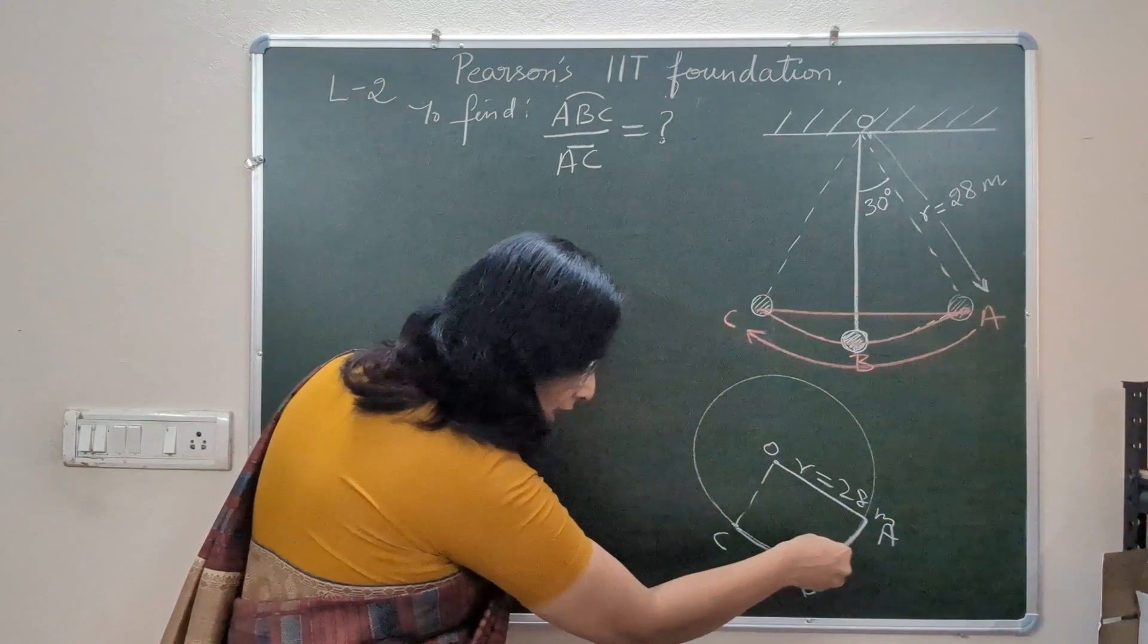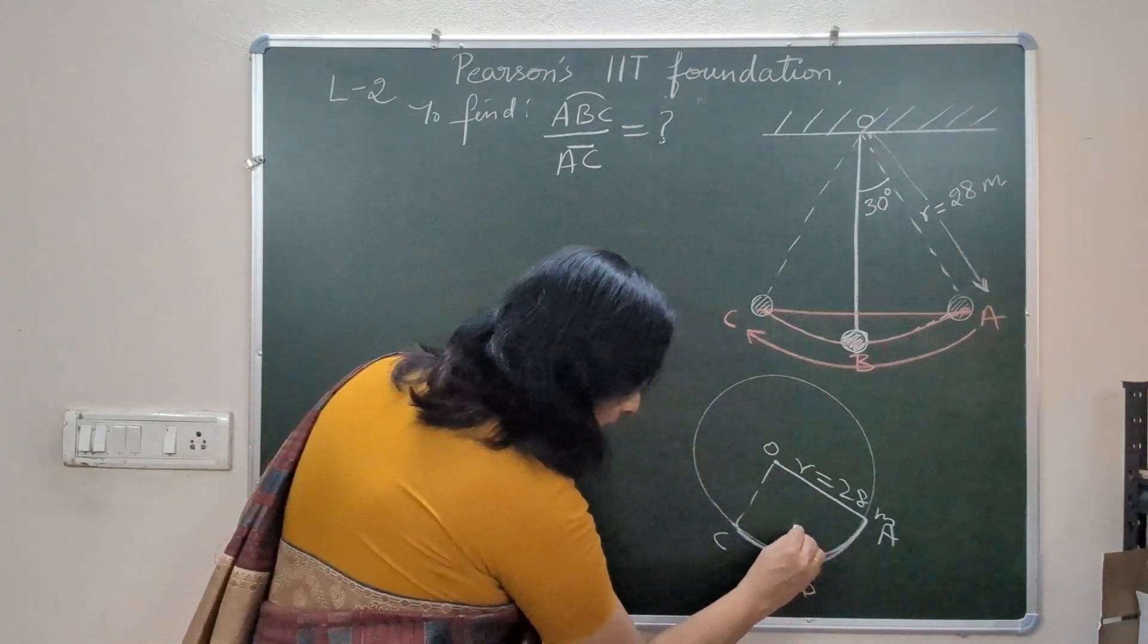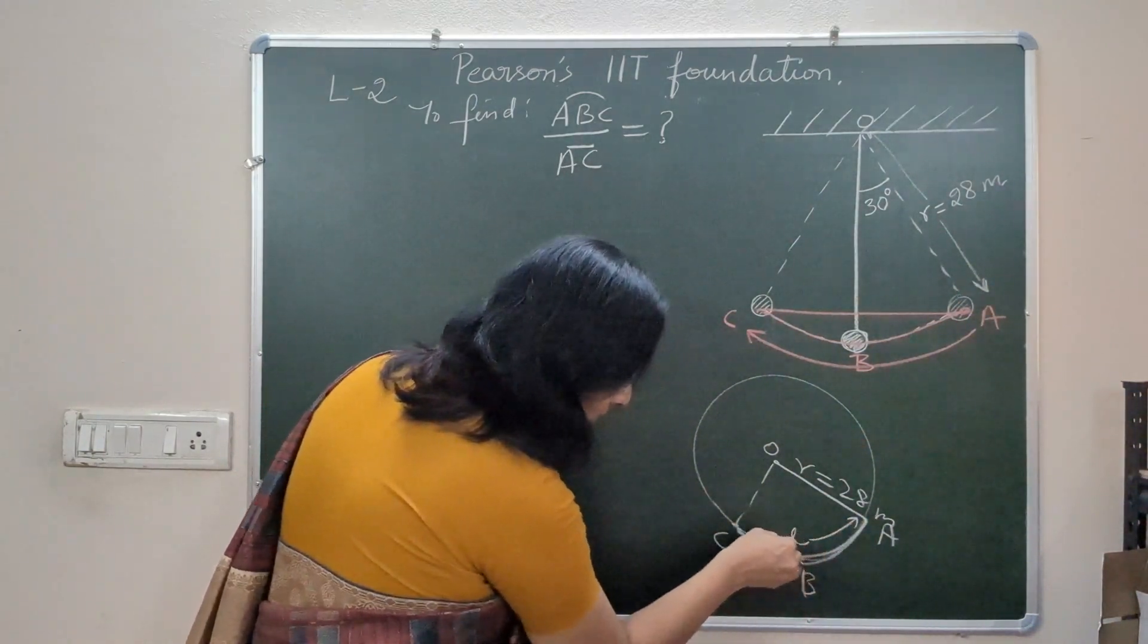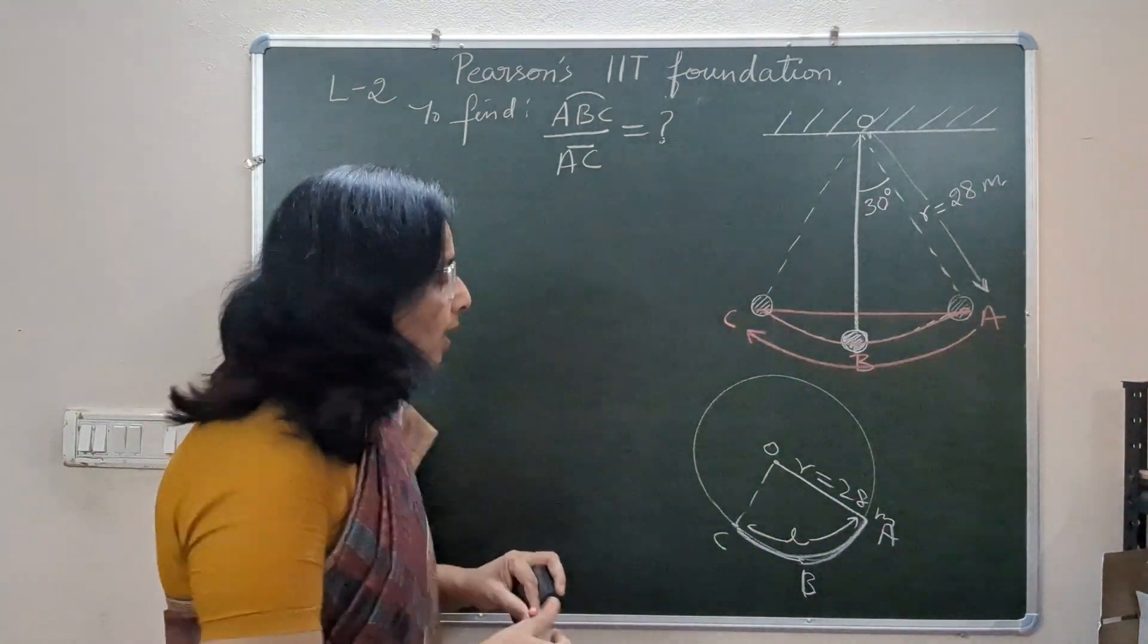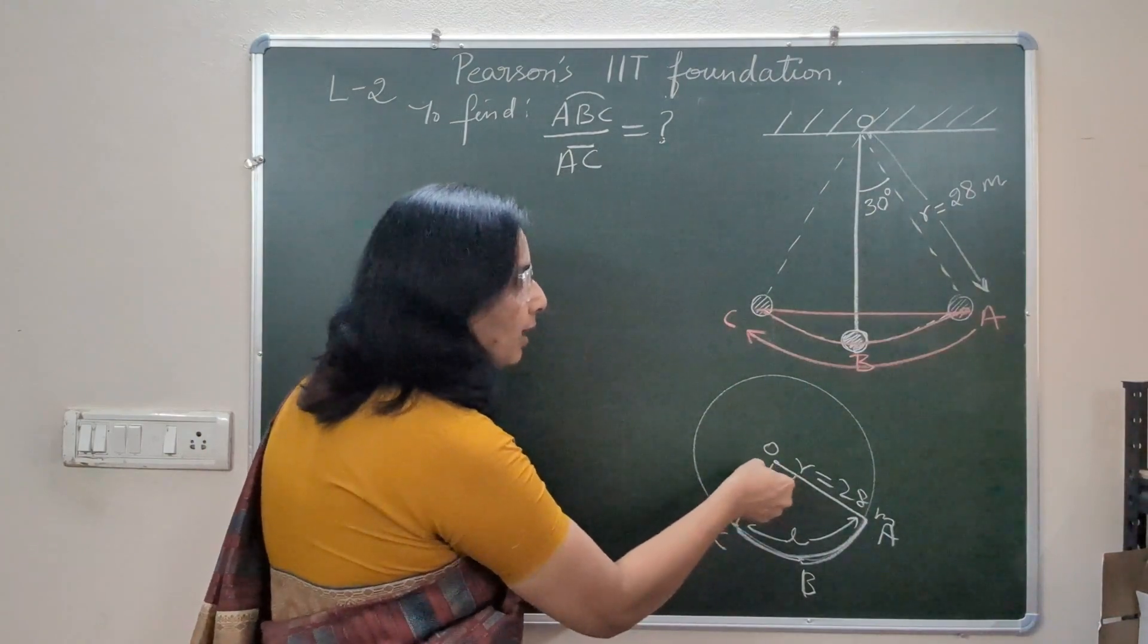A and C are the extreme positions. So we have to find this length, which means we have to find length of arc. We have to find length of arc of a circle.